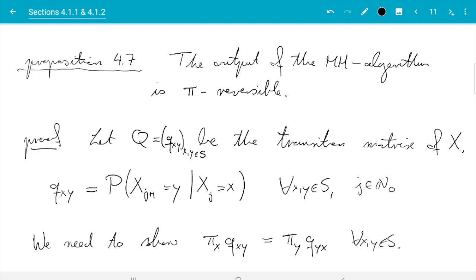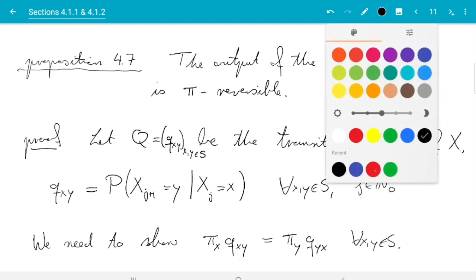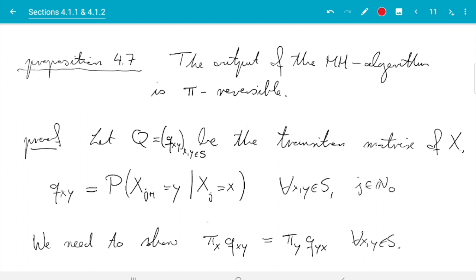And first, there is an important special case. Namely, if X equals Y, we don't need to do anything. So let me just write it in red. If X equals Y, we need to show pi_x q_xx equals pi_x q_xx. And well, it's the same thing. So that is clear. So we have nothing to do for X equals Y. The detailed balance condition always holds if X equals Y.